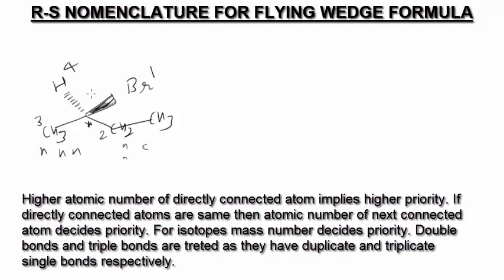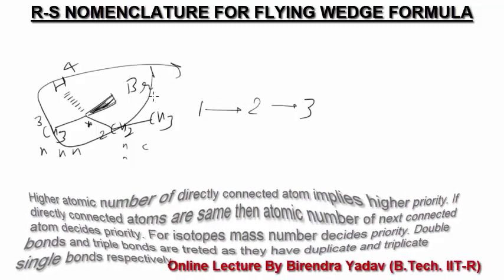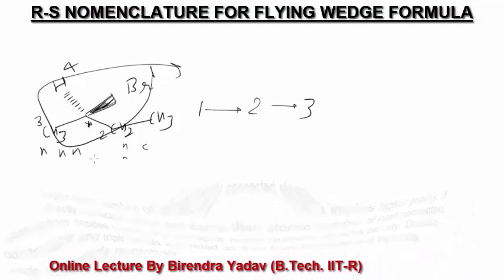So we have assigned priorities to the different groups or atoms attached to this chiral carbon. Now for RS configuration, keep in mind the fourth priority group must be below the plane, going away from the observer — that is why it must be on the broken wedge. Since it is already on the broken wedge, just check the 1, 2, 3 movement. The movement here is clockwise, and that is why the configuration of this carbon is R.